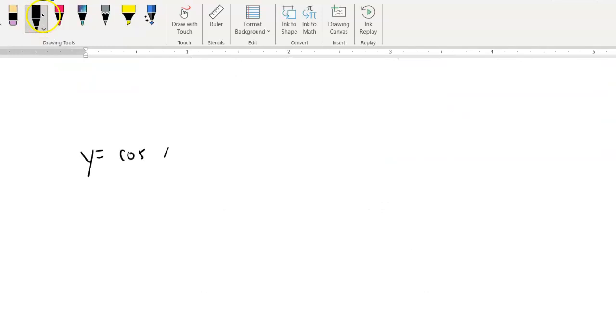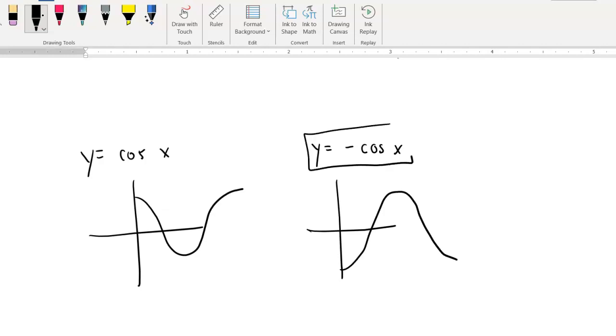Remember that Y equals cosine of X does look like this for one period. However, we could flip that vertically. We could flip that vertically. And so instead of starting at the top, it starts at its lowest point and then comes back down again. And that's what's happening here. So I'm going to base this one on the cosine function that's been flipped vertically.